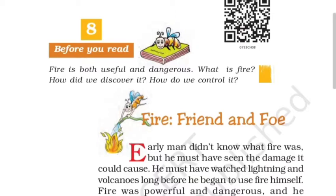What is fire? The first question we have to understand in the chapter is what fire really is. Second, how did we discover it — how did we get to know about fire, how did fire come into existence? Fire was already there, but how did we discover it? There are two things: one is invention and second is discovery — we are going to learn the difference between invention and discovery.